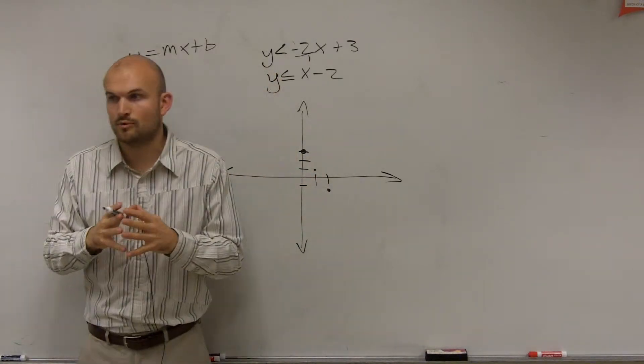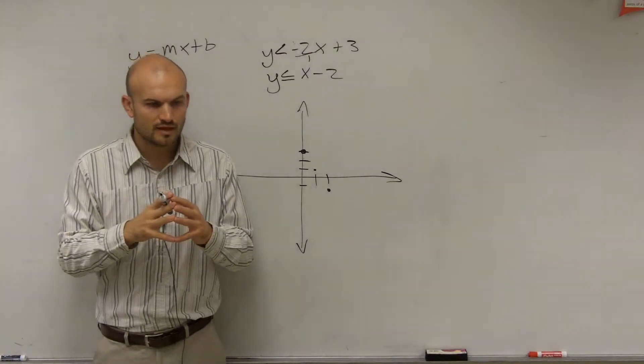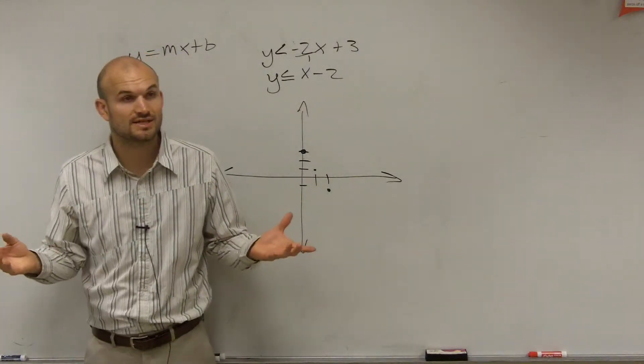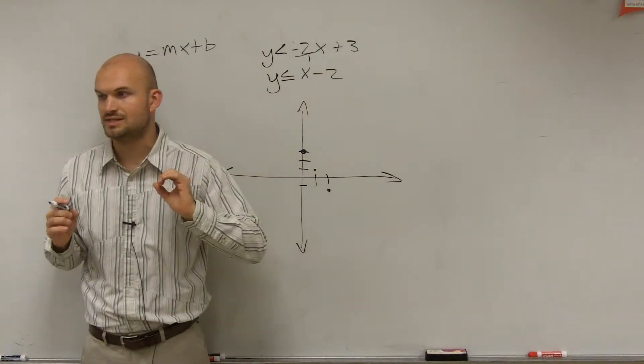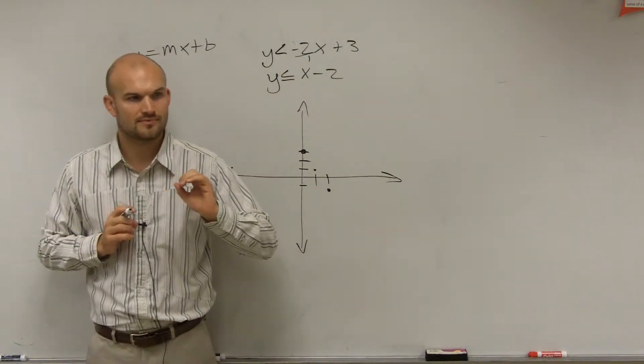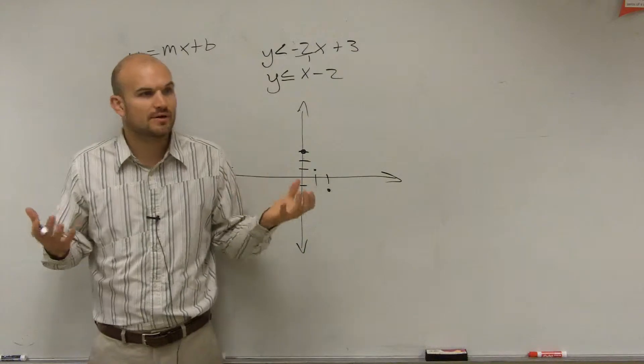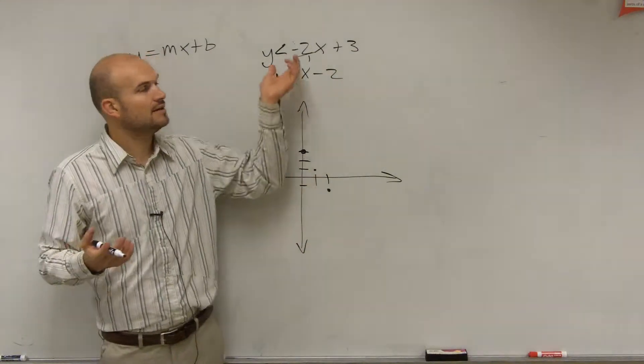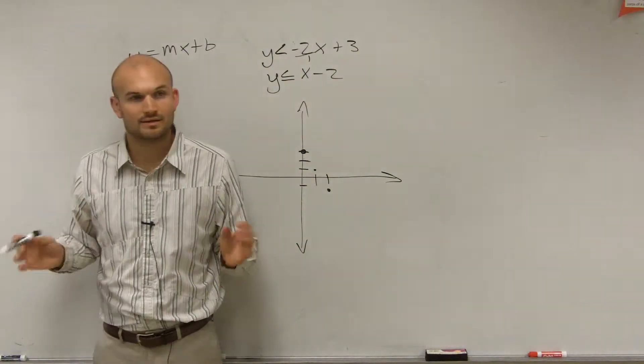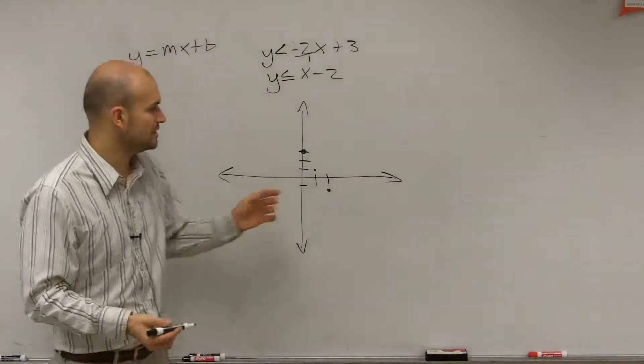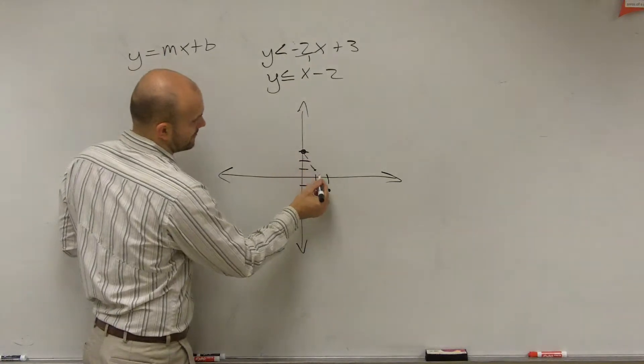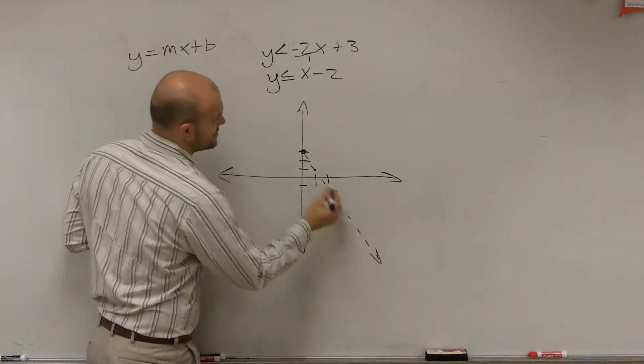Now, remember, whenever it's less than, if you guys remember, when we did inequalities to a single variable, whenever it was less than or greater than, do we have an open or a closed circle or point? Open. Well, ladies and gentlemen, we don't have any circle points on this, right? How do we have a line? So therefore, to create an open line, which means your points on the line are not going to be a part of your solution, what we do is we create a dashed line.